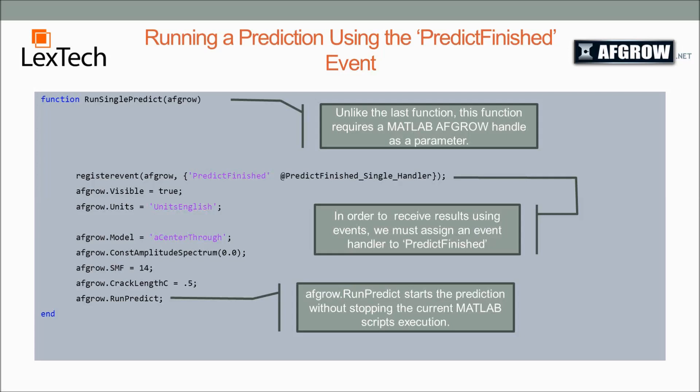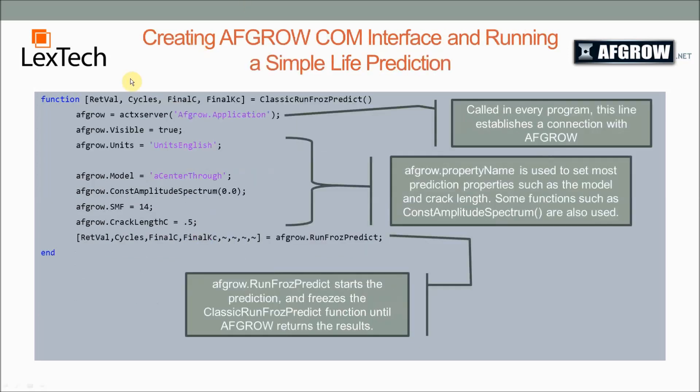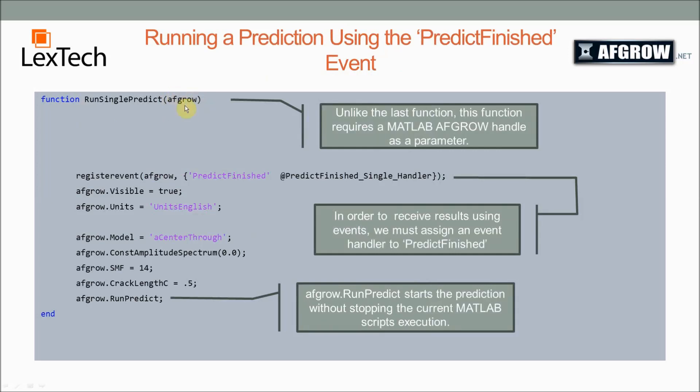This next example, instead of using runFrozenPredict, which will stop the program when it's executing, this method will be asynchronous. So it will run in the background instead of stopping the MATLAB program as we go. The first thing we need to do in order to do that is notice that we have AFGRO passed into the function, meaning that we will create the AFGRO object similar to how it's shown here, and then pass it as a parameter into this function.